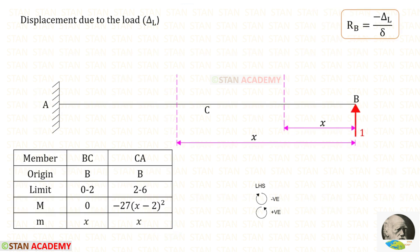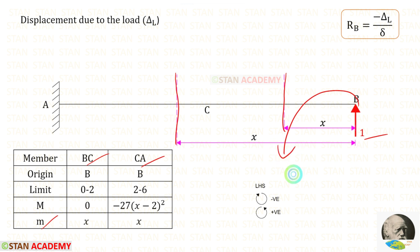Now we are going to find the moment m. To find that, we remove all loads from the beam and apply a unit load in the direction of RB. For both sections BC and CA, up to the section there is only the unit load acting in the anti-clockwise direction, so it is positive and the distance is x. Therefore m equals 1 times x, which gives x.